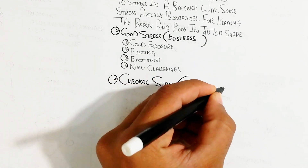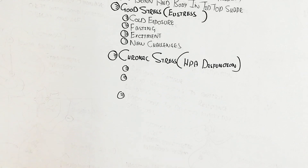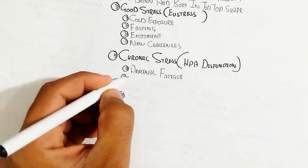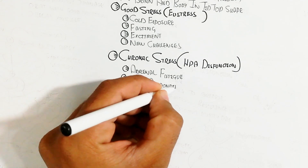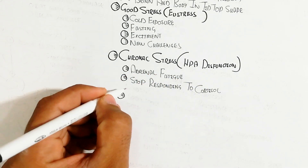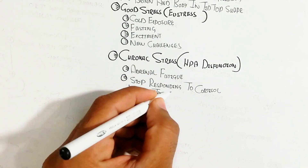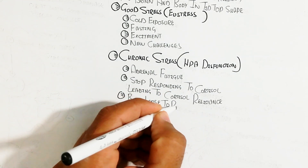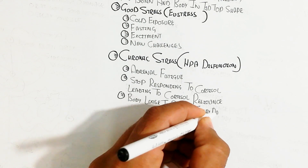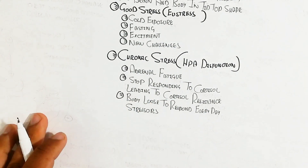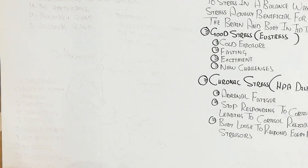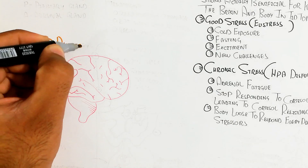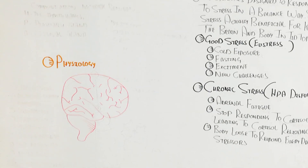Chronic stress causes HPA dysfunction — hypothalamic-pituitary-adrenal axis dysfunction — which leads to adrenal fatigue. The body stops responding to cortisol, leading to cortisol receptor resistance, and the body loses the ability to respond to everyday stressors. This chronic stress leads to harmful effects.